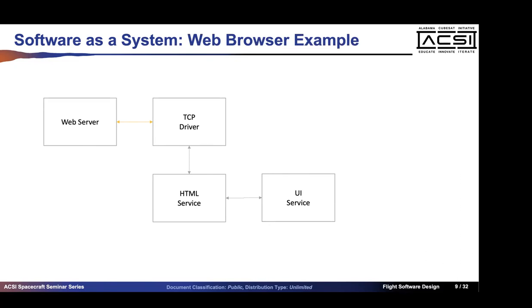What we just described is a web browser. The remote service is a web server; the TCP driver lets us talk to it; an HTML service pulls data from TCP; and a UI service renders that HTML. Very quickly we broke down a web browser into four services. If we only looked at Firefox's class diagrams, we'd be lost as to how the whole system works. We need to understand the system and how the parts fit together first.